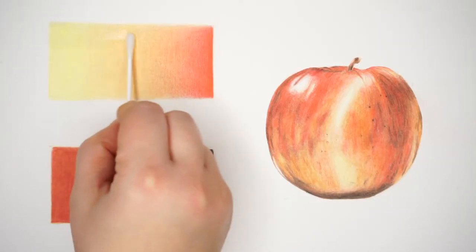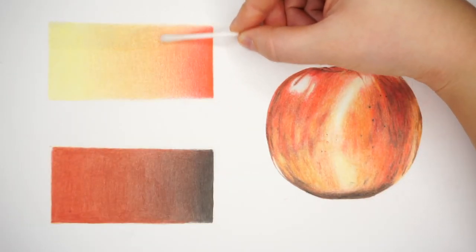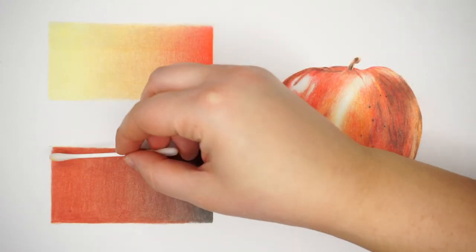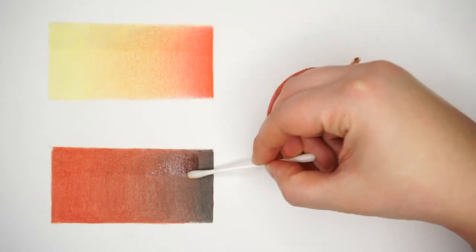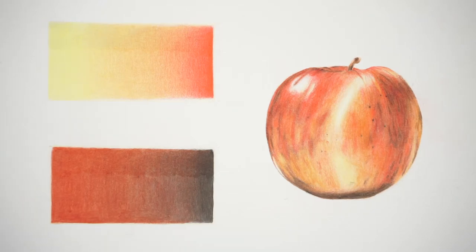I'm going to do one final test on the Zest It and the Copics blender. I'm going to use this apple and these swatches that I used for a previous video and do little sections of blending on both.